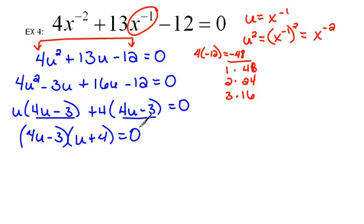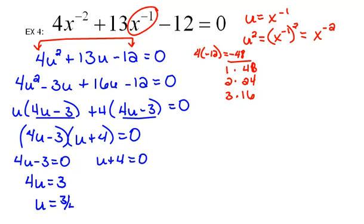Now that is fully factored, and we're ready to solve. So if I set each factor equal to 0, and then I need to go ahead and solve each one, that would be 4u equals 3, or u equals 3 fourths. Over here, if I subtract 4 from both sides, we get u equals negative 4.